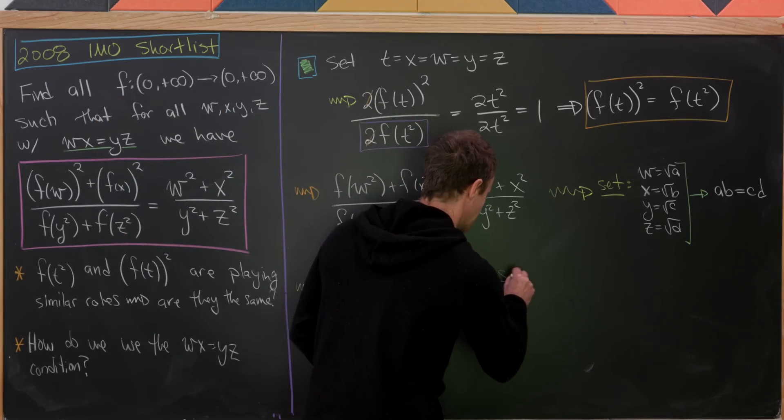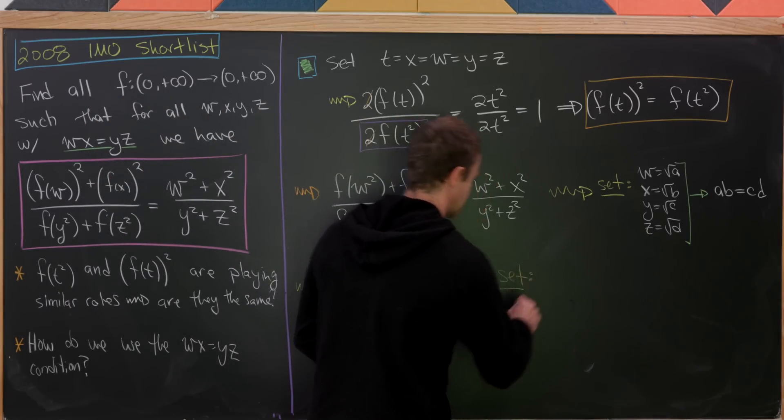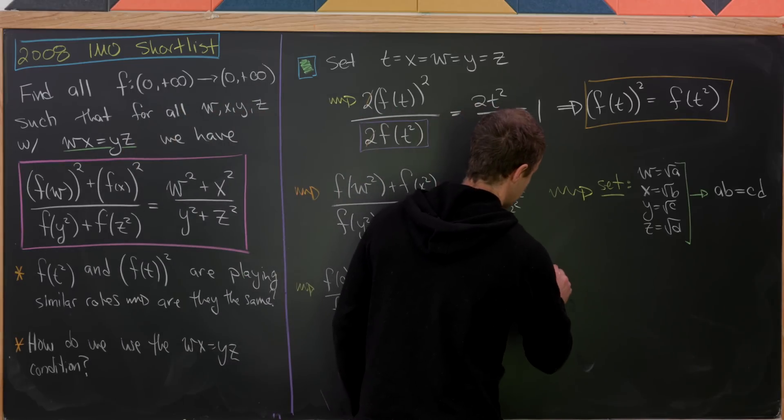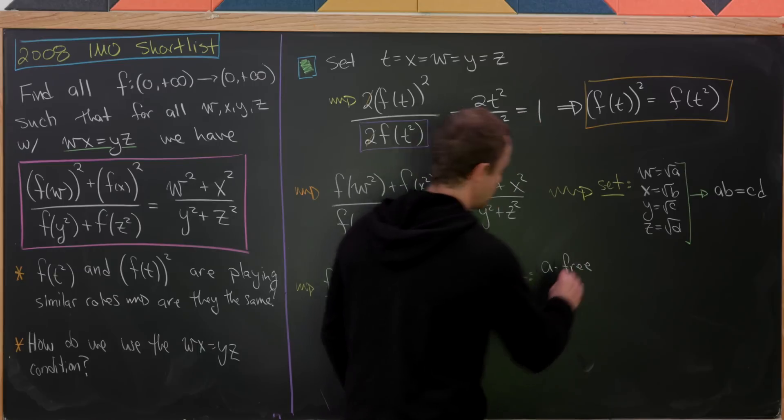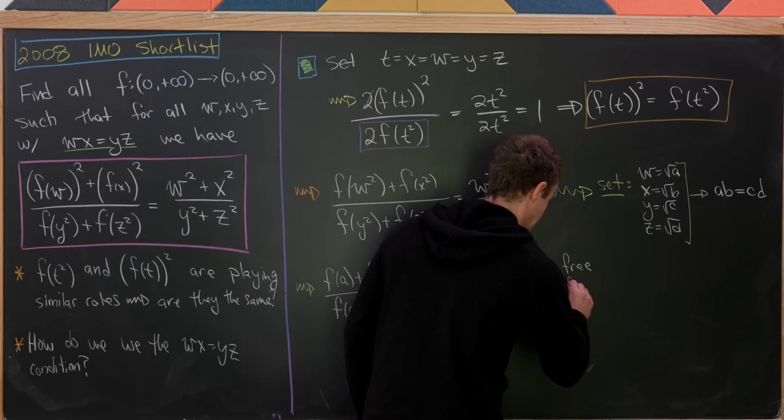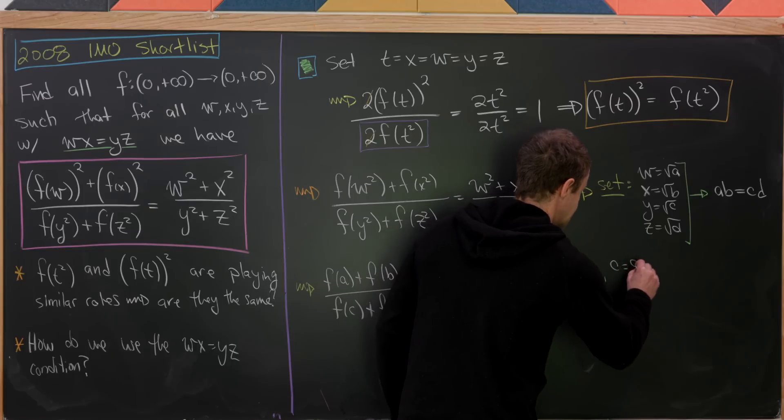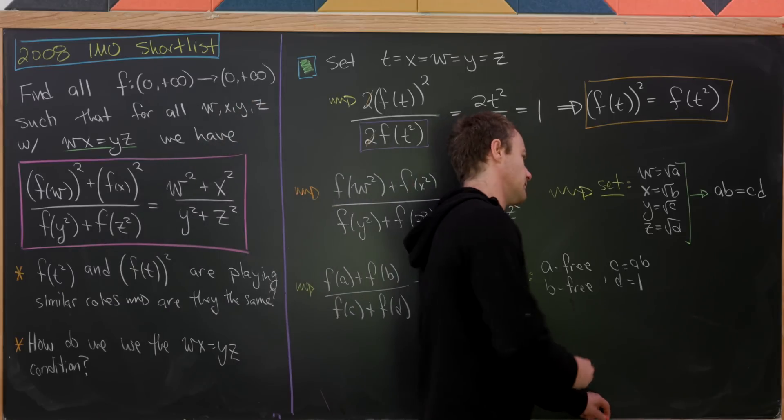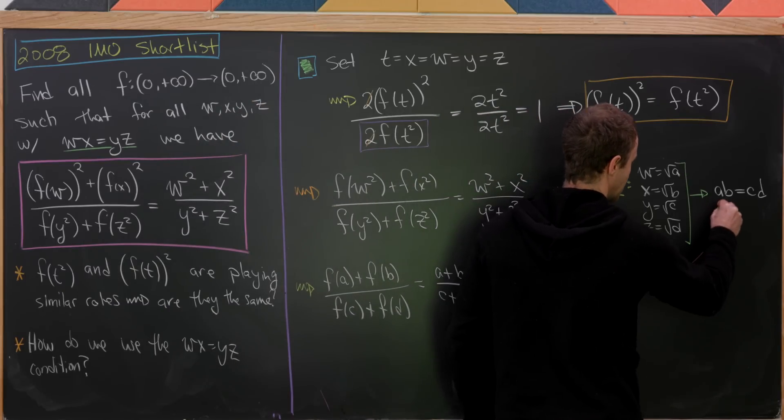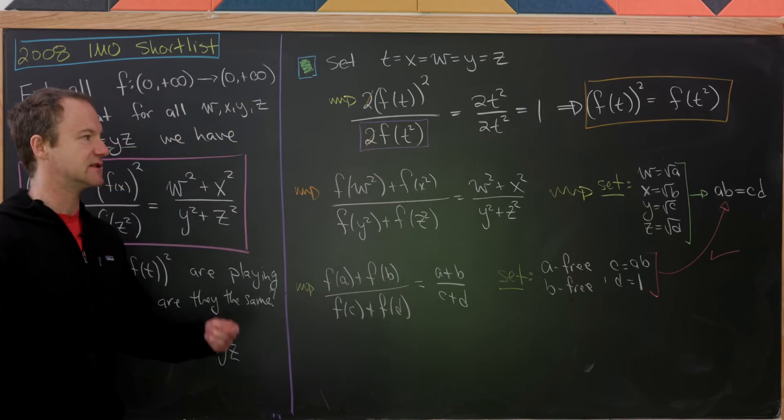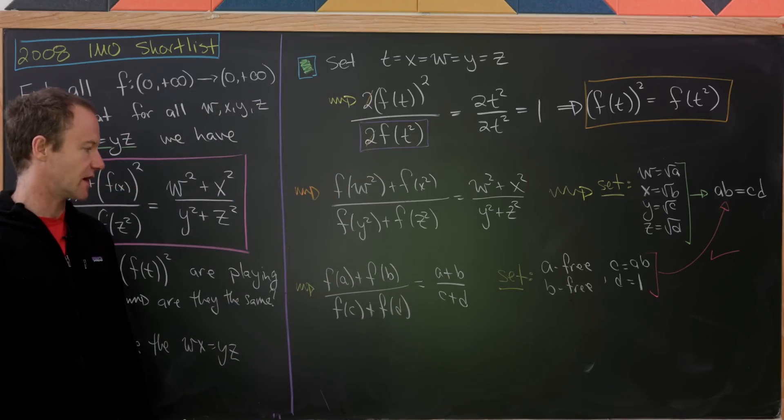Let's set a equal, well, let's take a to remain free. And then we'll take b also to remain free. And then we'll take c to be a times b and d to be one. And notice that our maybe necessary equation up here is still satisfied, because we have a times b is the same thing as a times b times one. We're good to go there.